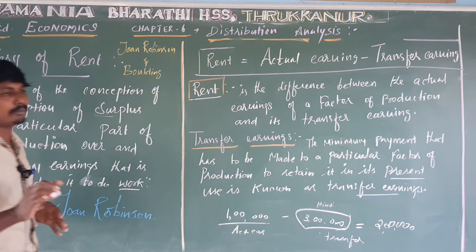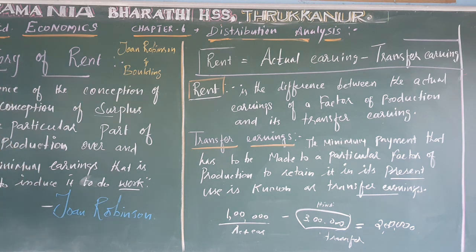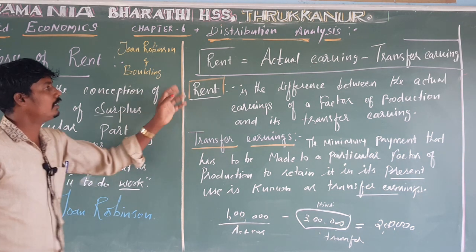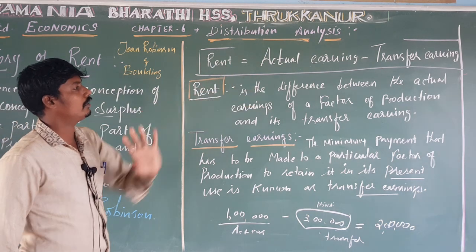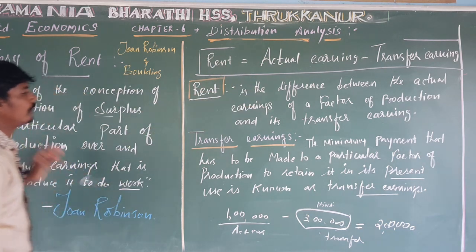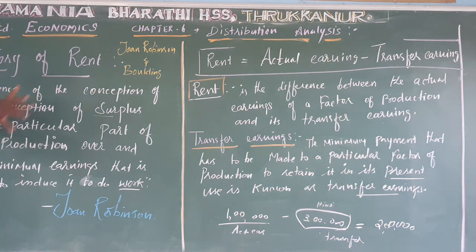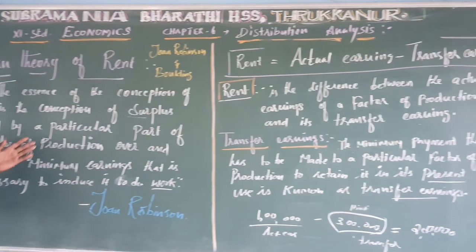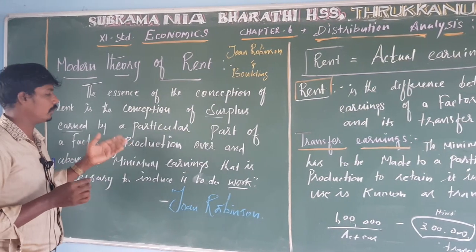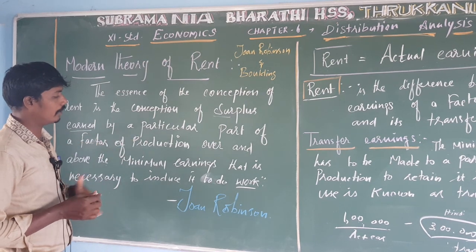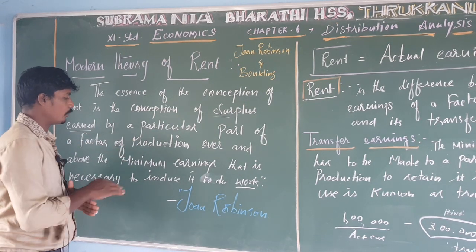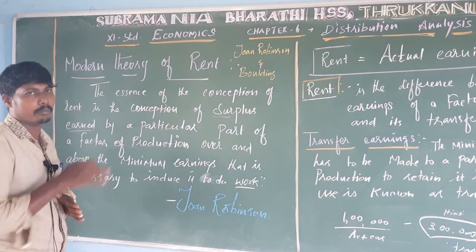To summarise: rent equals actual earnings minus transfer earnings. Joan Robinson and Boulding state that rent is a surplus earned by a particular part of a factor of production — whether land, labour, capital, or organisation — over and above the minimum earnings required.